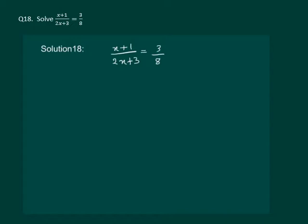We can see there is no other number which is added or subtracted either to the left hand side or right hand side. So we can directly cross multiply and get 8 times x plus 1 is equal to 3 times 2x plus 3.